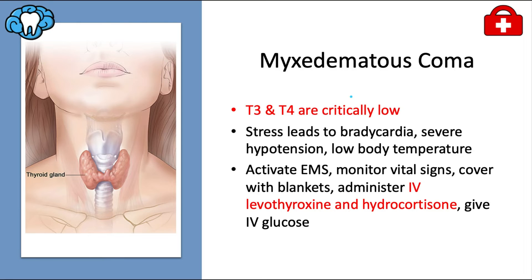Myxedema coma is essentially the opposite of thyroid storm but equally dangerous. Here, thyroid hormone is critically low, and stressful situations like infection, surgery, or trauma can precipitate coma in an untreated or poorly controlled hypothyroid patient. It involves bradycardia, severe hypotension, and low body temperature, and is more common in winter months. It carries a high mortality rate. Management: call 911, monitor vitals, cover the patient with blankets to conserve heat, administer IV levothyroxine (thyroid replacement), hydrocortisone, and IV glucose. CPR may be needed.